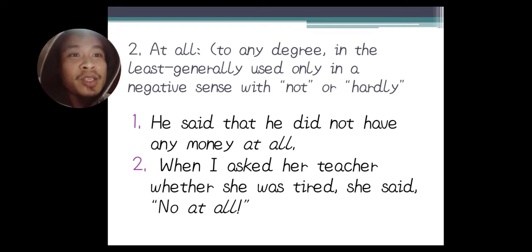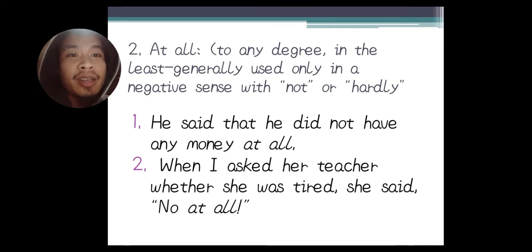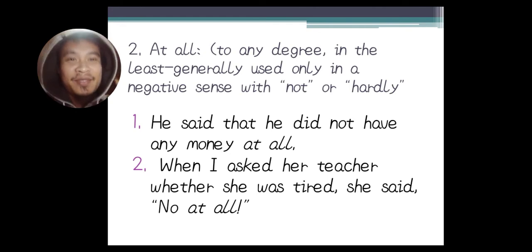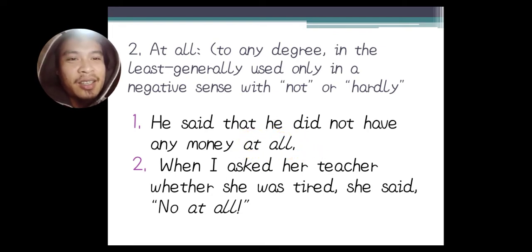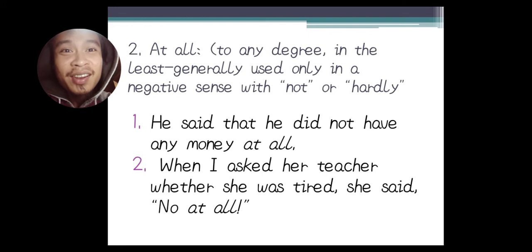'At all' means to any degree, in the least — generally used only in a negative sense with 'not' or 'hardly.' Example one: He said that he did not have any money at all. Example two: When I asked her teacher whether she was tired, she said 'not at all.'